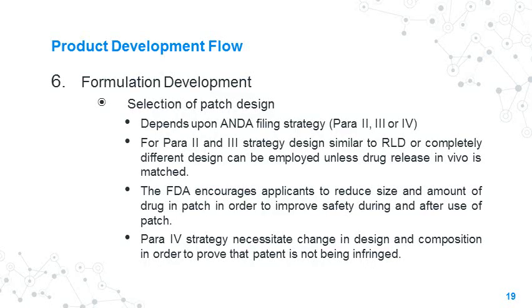After the above-mentioned activities, formulation development is initiated. The first step is the selection of patch design, which depends upon the ANDA filing strategy — Para 1, 2, 3, or 4. For Para 2 and 3 strategy, a design similar to the RLD or a completely different design can be employed, as long as drug release in vivo is matched. The FDA encourages applicants to reduce the size and amount of drug in the patch to improve safety. Reduction in patch size and amount of drug while still providing comparable drug release as the RLD is acceptable to US FDA. The Para 4 strategy usually necessitates changing design and composition to prove the patent is not being infringed.